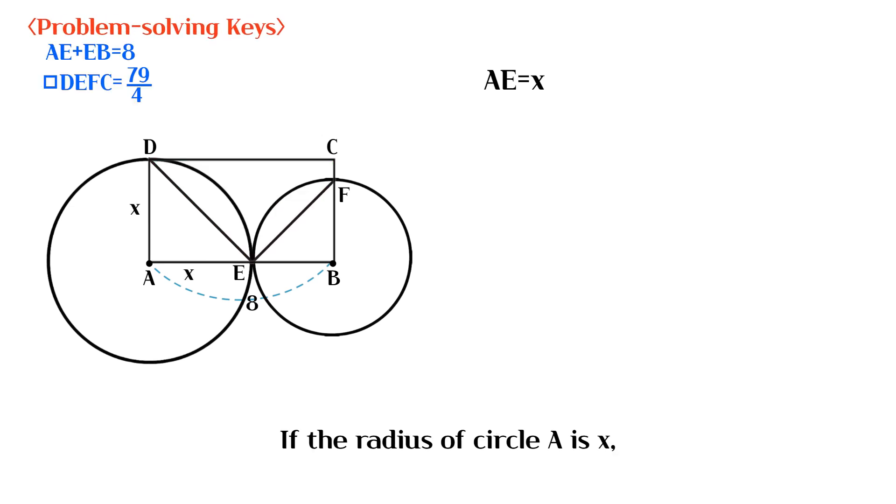If the radius of circle A is x, the radius of circle B is 8 minus x.